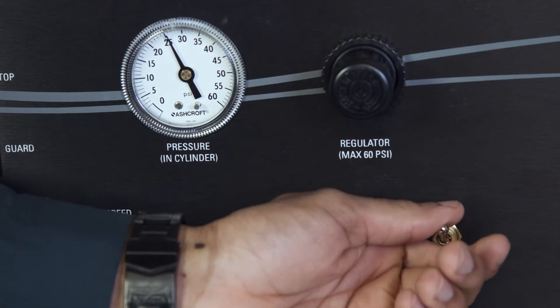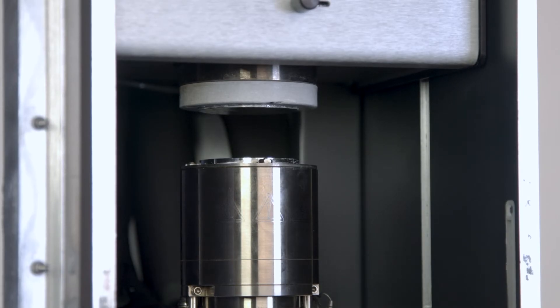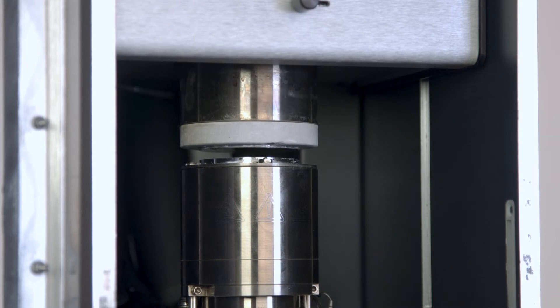To test, lower the top plate with the switch on the front instrument panel. You should see a noticeable difference in the space between the top and bottom plates.